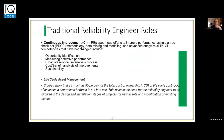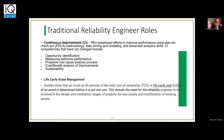Continuous improvement — the reliability engineer needs to be intimately involved with that: identifying opportunities for improvement, measuring defects, going after root cause analysis, and cost-benefit analysis. Life cycle management: 95% of the total cost of ownership — or life cycle cost — is determined before the product is even put into use, early on in design. So we need to pursue life cycle asset management for both new asset design and modification of existing assets.